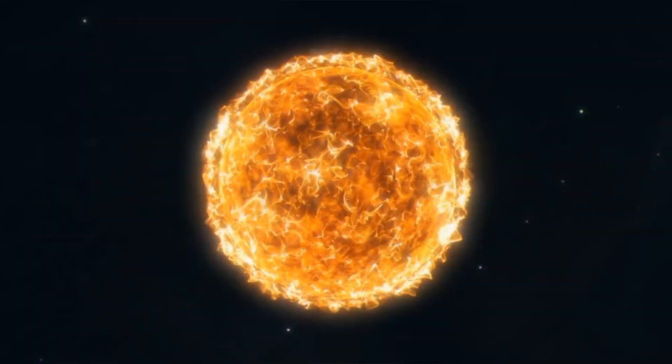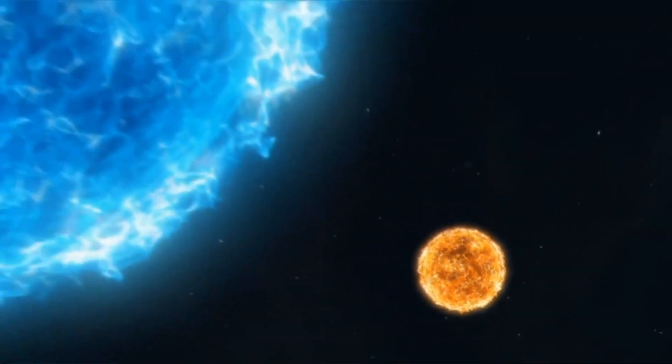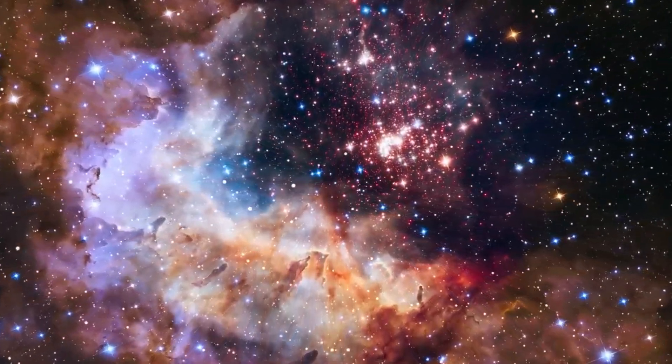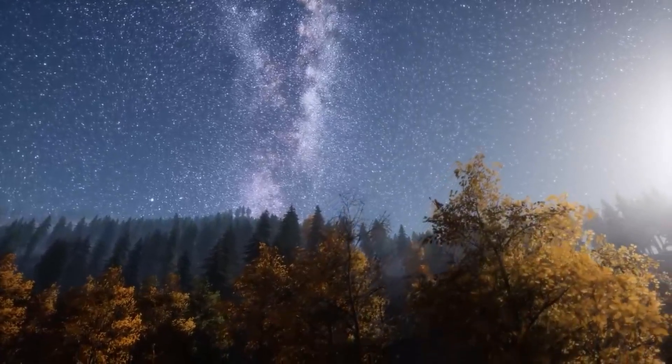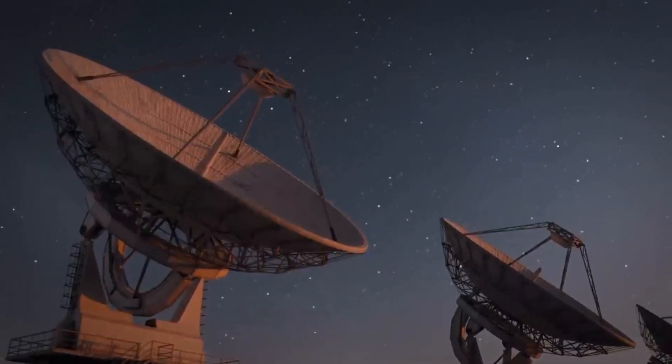From the smallest grains of sand to gigantic stars and planets, a single star like our sun is estimated to consist of 10 to the power of 57 atoms. This number is a 1 followed by 57 zeros.